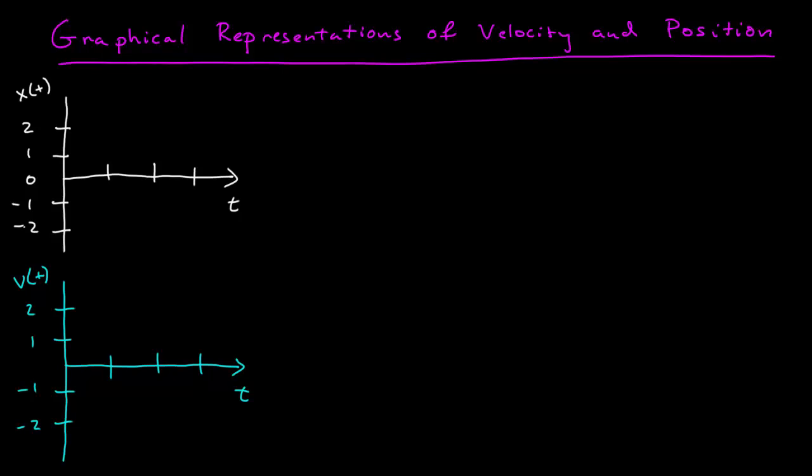I'm going to give myself a pretty simple example of a position function here, x of t, where position is in meters and time is in seconds. I'm going to call this 2 minus t, and so here's my position function. Let me give a graphical representation of that.